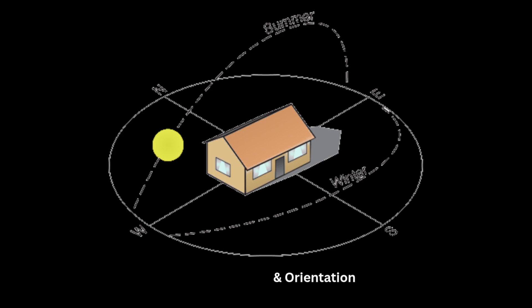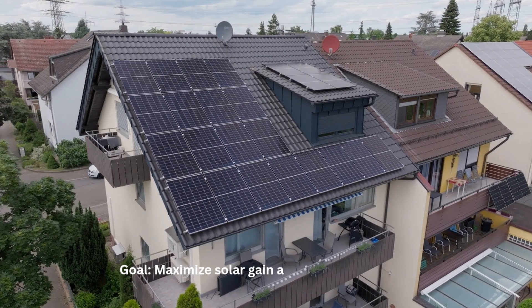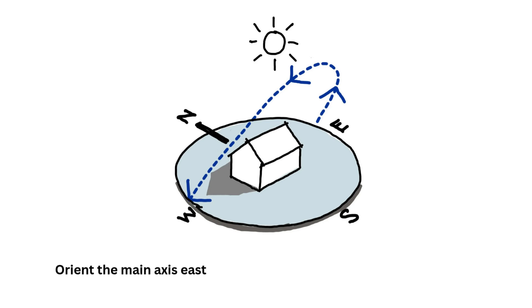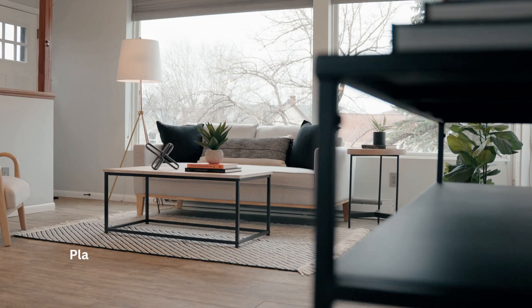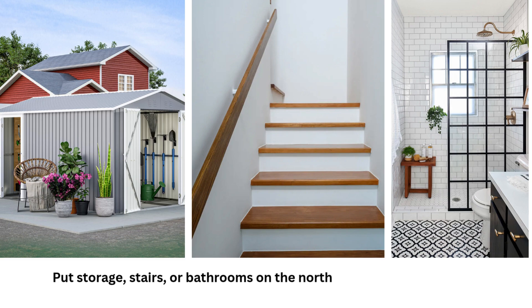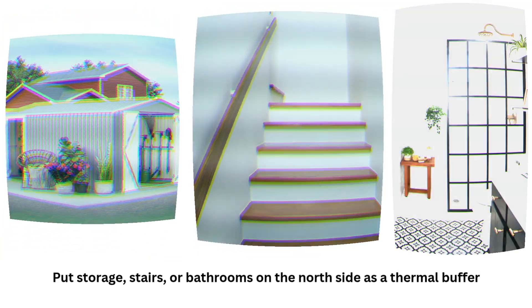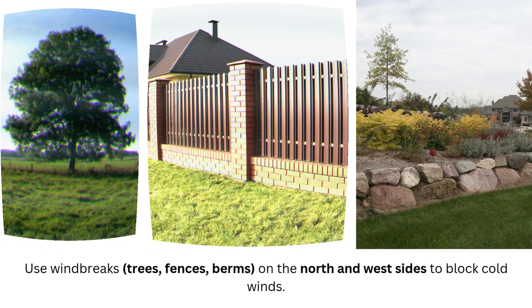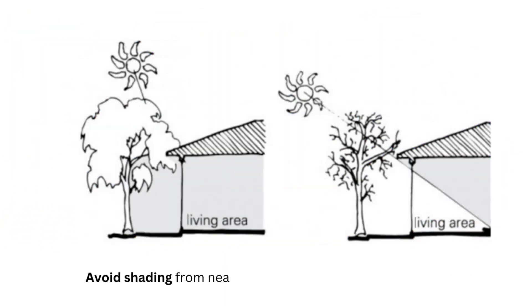Site planning and orientation: the goal is to maximize solar gain and reduce wind exposure. The south facade gets the most winter sun, so place living spaces like the living room and kitchen on the south side. Put storage, stairs, or bathrooms on the north side as a thermal buffer. Use windbreaks — trees, fences, or berms — on the north and west sides to block cold winds, and avoid shading on the south side from nearby buildings or trees.